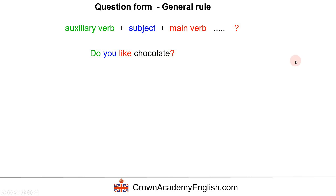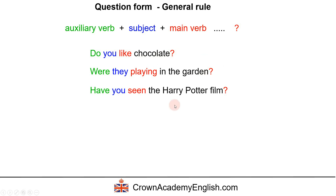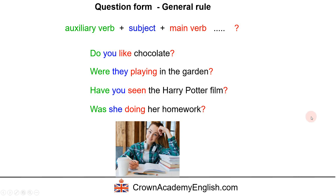Let's look at some other examples. 'Were they playing in the garden?' 'Have you seen the Harry Potter film?' — here we have an example of the present perfect in question form, and the auxiliary verb is 'have'. 'Was she doing her homework?' And of course, don't forget the question mark at the end.